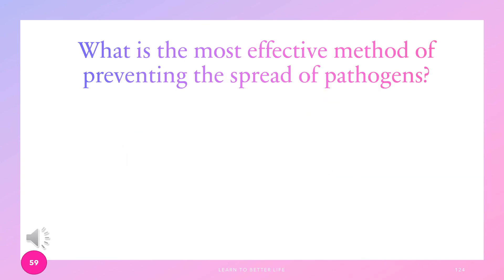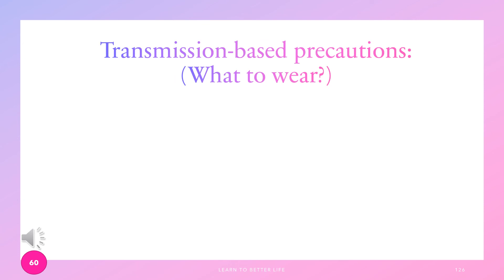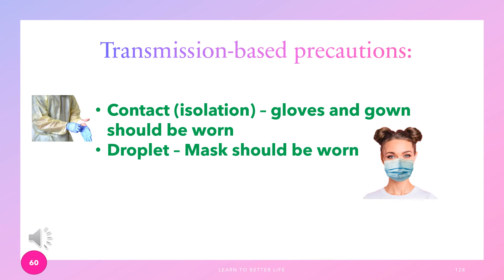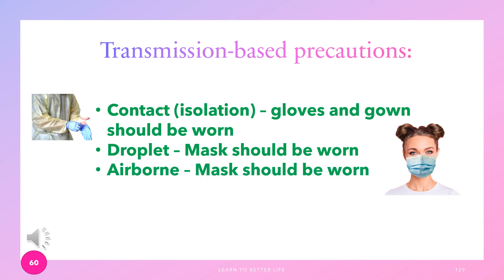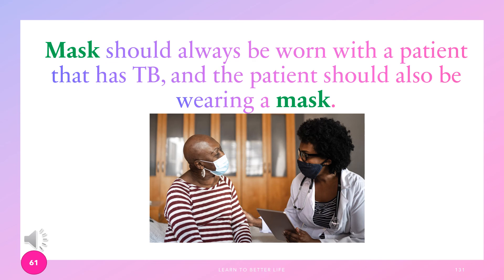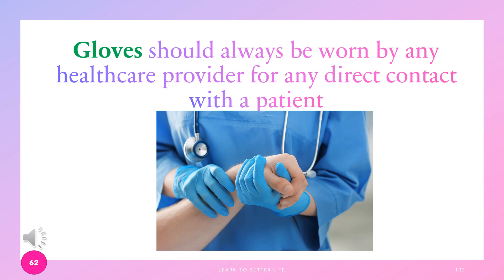What is the most effective method of preventing the spread of pathogens? Handwashing. For contact isolation, gloves and gowns should be worn. For droplet, a mask should be worn. For airborne, a mask should also be worn. For a patient with tuberculosis, both the healthcare provider and the patient should wear a mask. Gloves should always be worn by any healthcare provider for any direct contact with a patient.